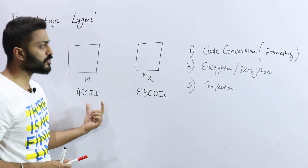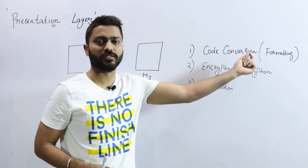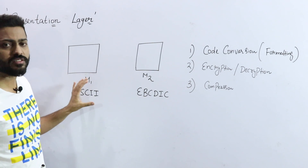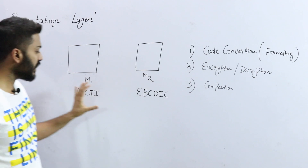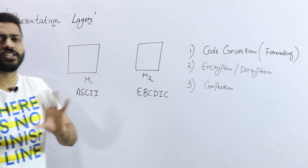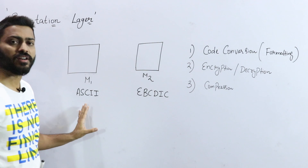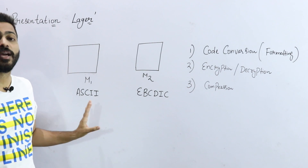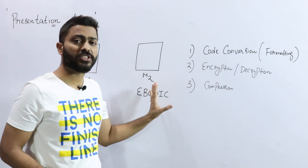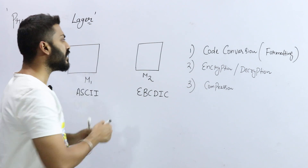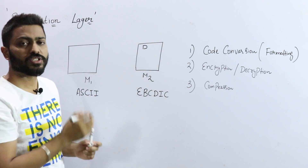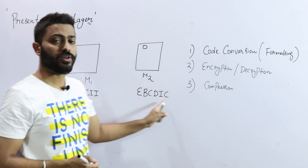The first and very important responsibility is code conversion. Code conversion means, let's say two machines M1 and M2. Machine M1 is using a SkyCode — some application which is running on M1 is based on SkyCode. There is another machine M2, and in M2 there is some application which is using the AppCityCode.